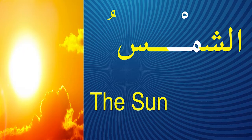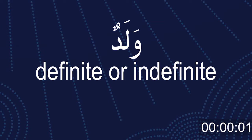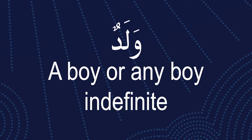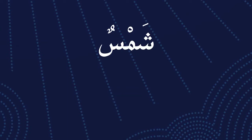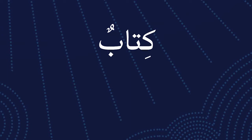Al-shamsu — definite, ma'arifa — the sun, which we all know. Waladun — indefinite — means 'a boy,' or any boy. Jayyid. Of course, I know you're still asking about this sound: un, in — waladun, shamsun, kitabun. I will explain it in the next video, inshallah.